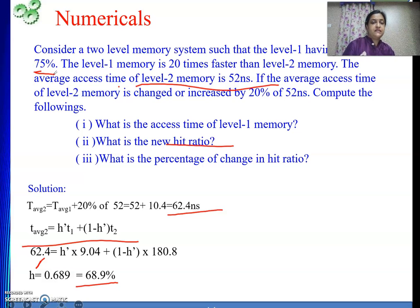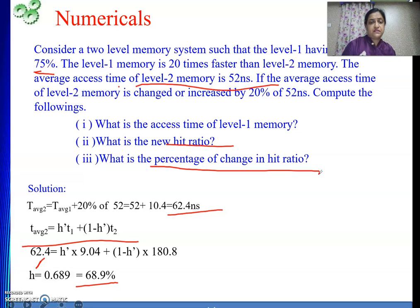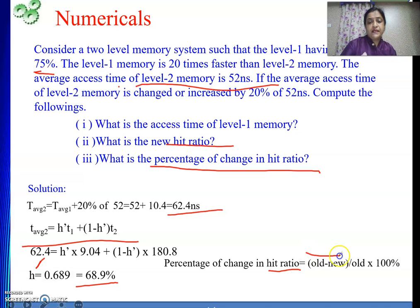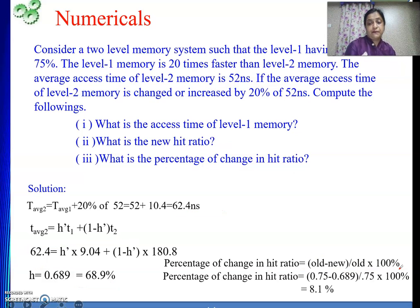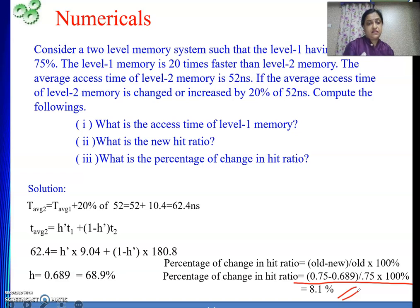The next question is: what is the percentage of change in hit ratio? When something changes, we find the percentage change as: (old minus new) divided by old, multiplied by 100%. The old hit ratio was 75% (or 0.75) and the new one is 68.9%. Performing this calculation, the hit ratio has changed by 8.1%.